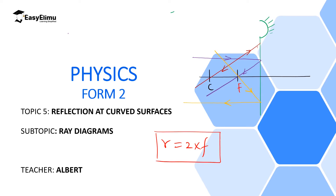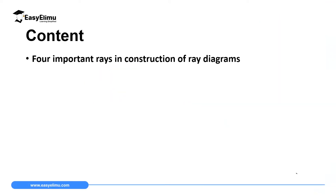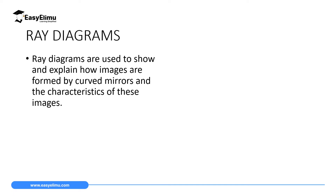My name is Albert. I hope you will enjoy the lesson. By the end of this lesson, I expect you to be able to draw four important rays which are used in the construction of ray diagrams. Ray diagrams are used to show and explain how images are formed by curved mirrors and the characteristics of these images.